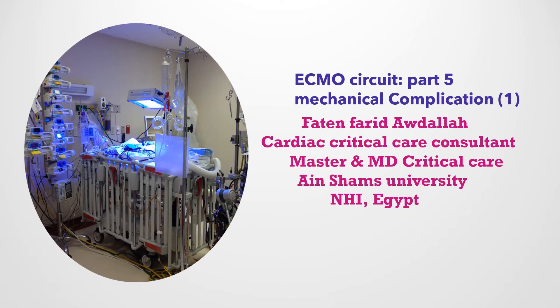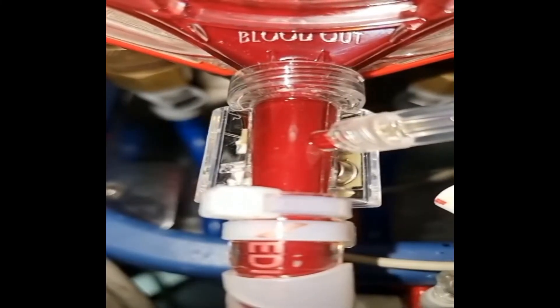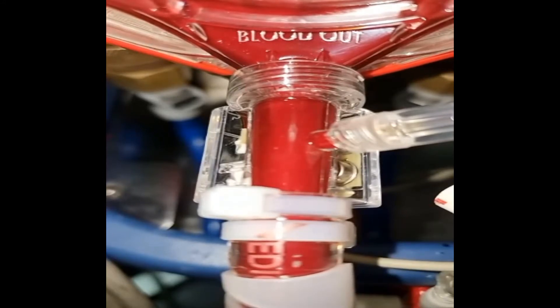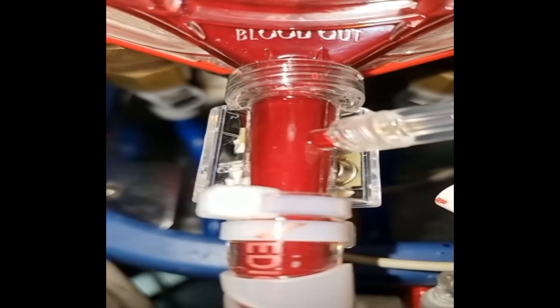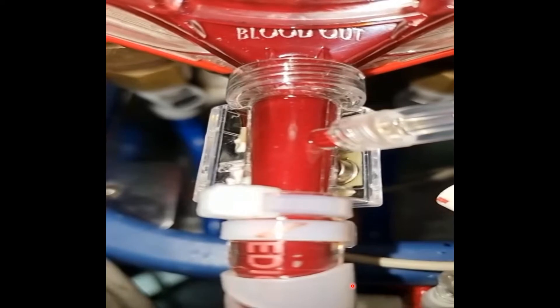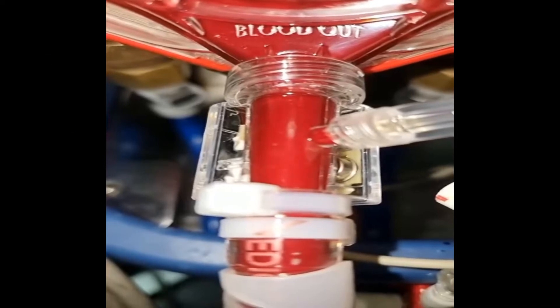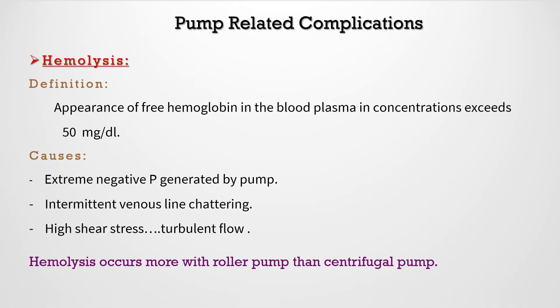ECMO circuit complications. In this lecture I will cover complications of the circuit itself, the machine, and its components. I will divide the complications into two parts. The ECMO circuit is a closed circuit that starts and ends at the patient, with continuous flow and no pulse, unlike the original heart. Every part of the circuit — the cannula, pump, oxygenator, console, and heat exchanger — will have its own complications.